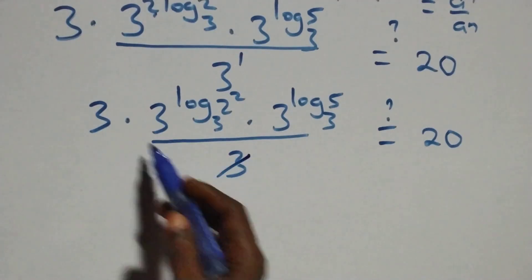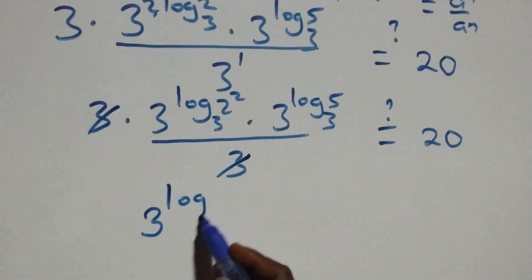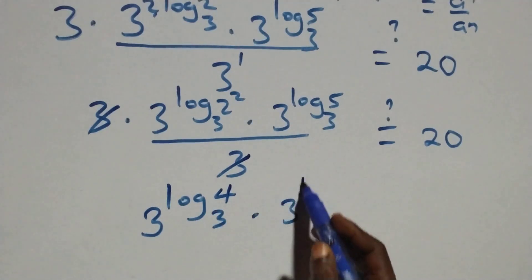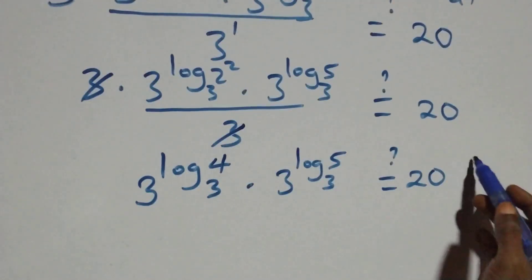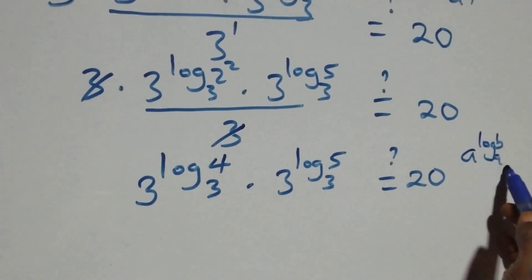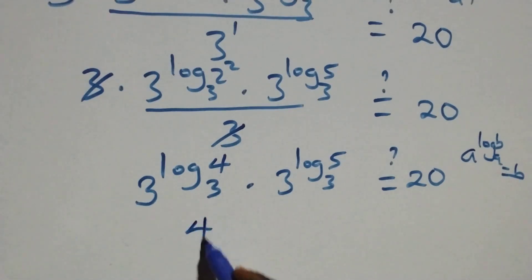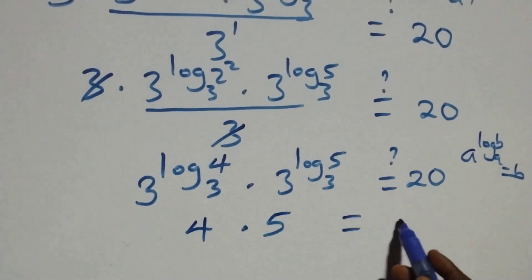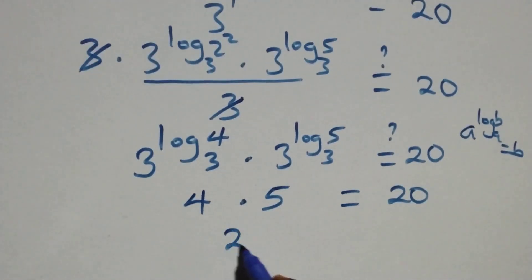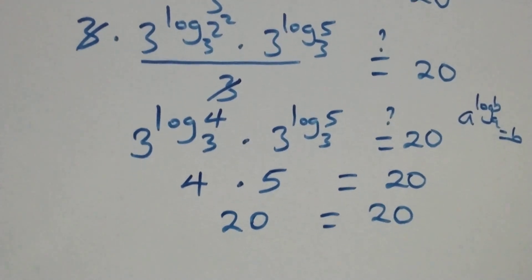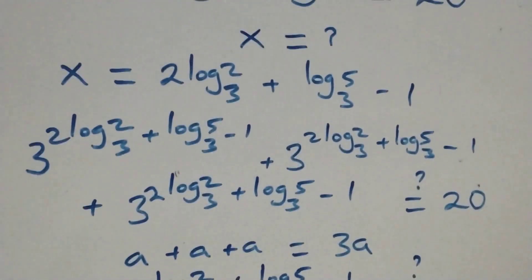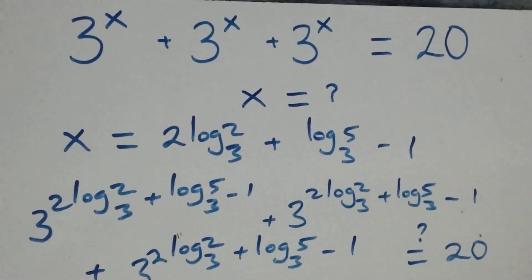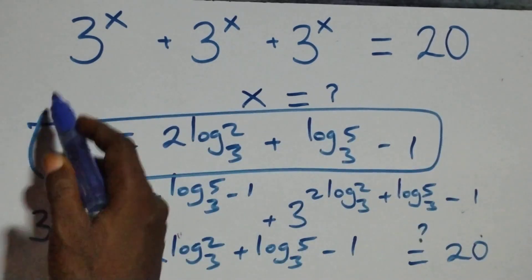The 3s cancel each other. We have 3 raised to power log 4 base 3 times 3 raised to power log 5 base 3, equals 20. This follows when a raised to power log b to base a equals b. So we have 4 times 5, which equals 20 on this side. And of course 4 times 5 equals 20. The left-hand side equals the right-hand side, and therefore we conclude that x equals 2 log 2 base 3 plus log 5 base 3 minus 1 satisfies the given problem.